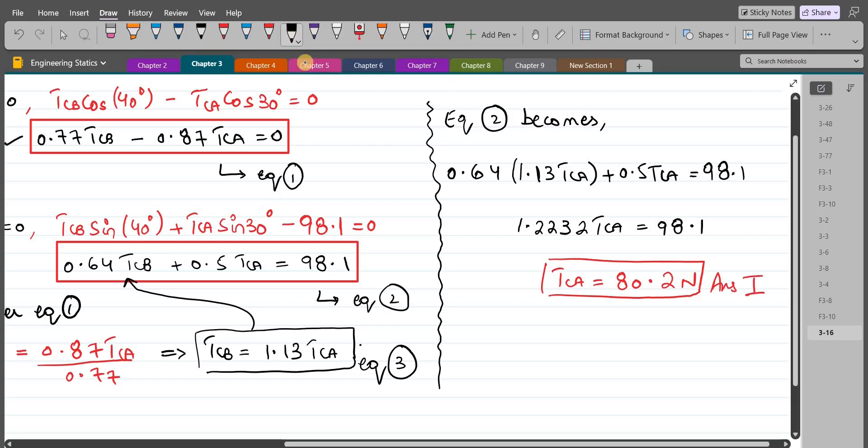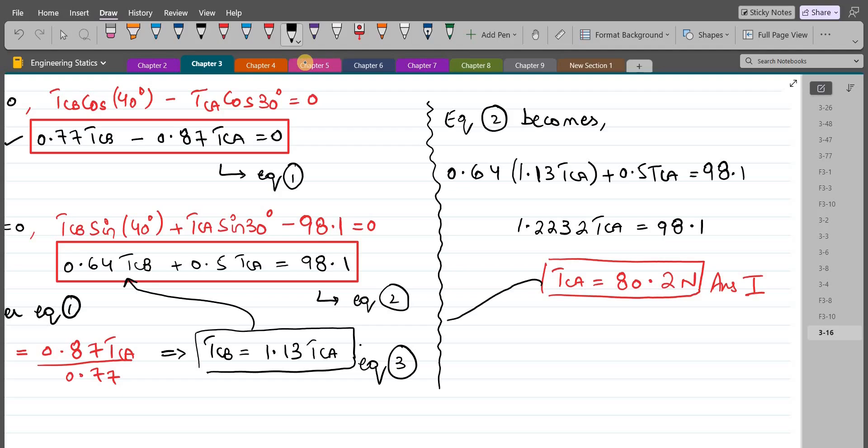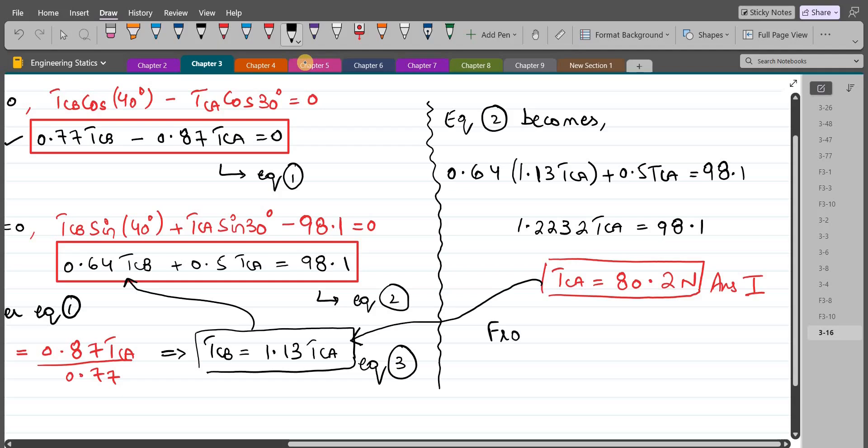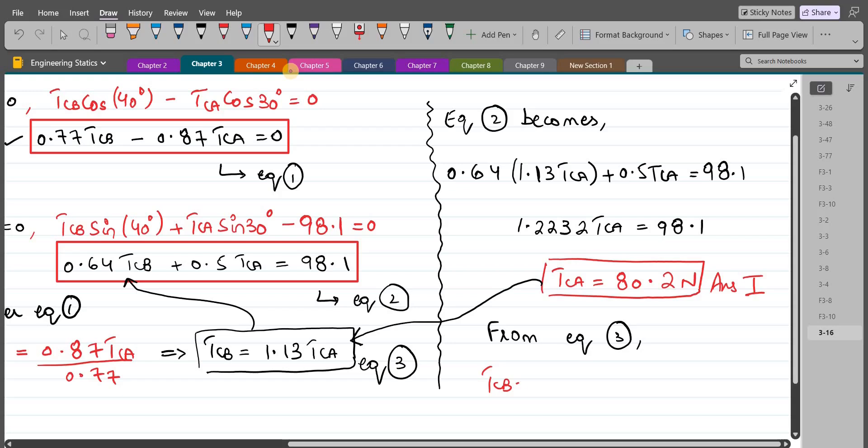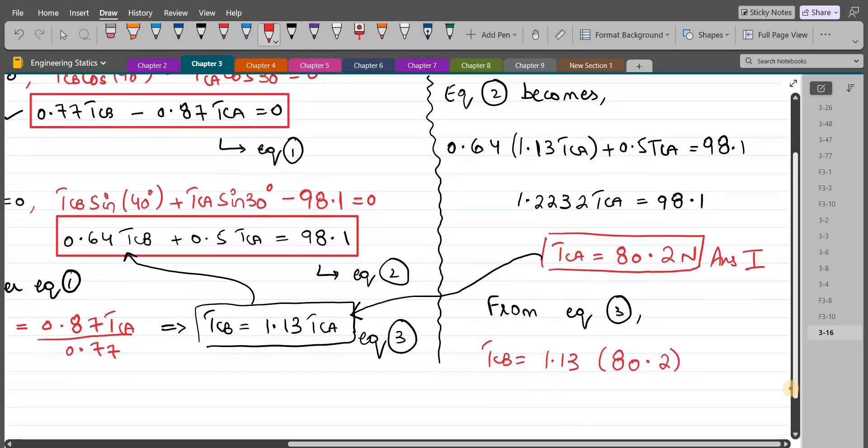Now to find the value of TCB, we can substitute the value of TCA back into equation three. So from equation three, TCB equals 1.13 into TCA, and TCA is 80.2. So TCB comes out to be 90.6 Newtons. So this is our second answer.